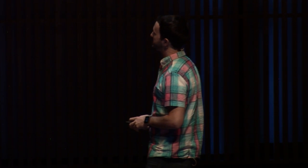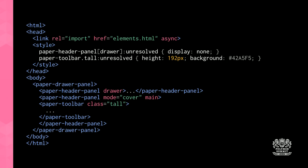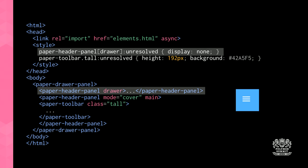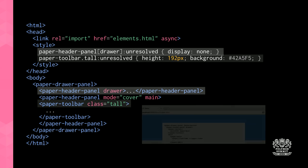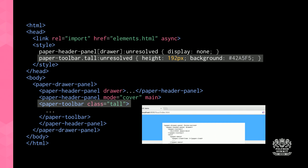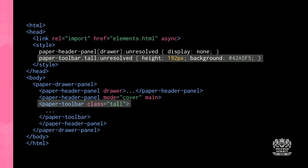Custom elements have an :unresolved pseudo-selector you can use to style markup before it gets upgraded. For example, for the app drawer icon that isn't interactive yet, I hide it using display:none targeting paper-header-panel:unresolved. I also mimic the paper-toolbar styling — targeting it in its unresolved state with a 192-pixel height and blue background — to replicate what the paper-toolbar CSS will eventually provide.